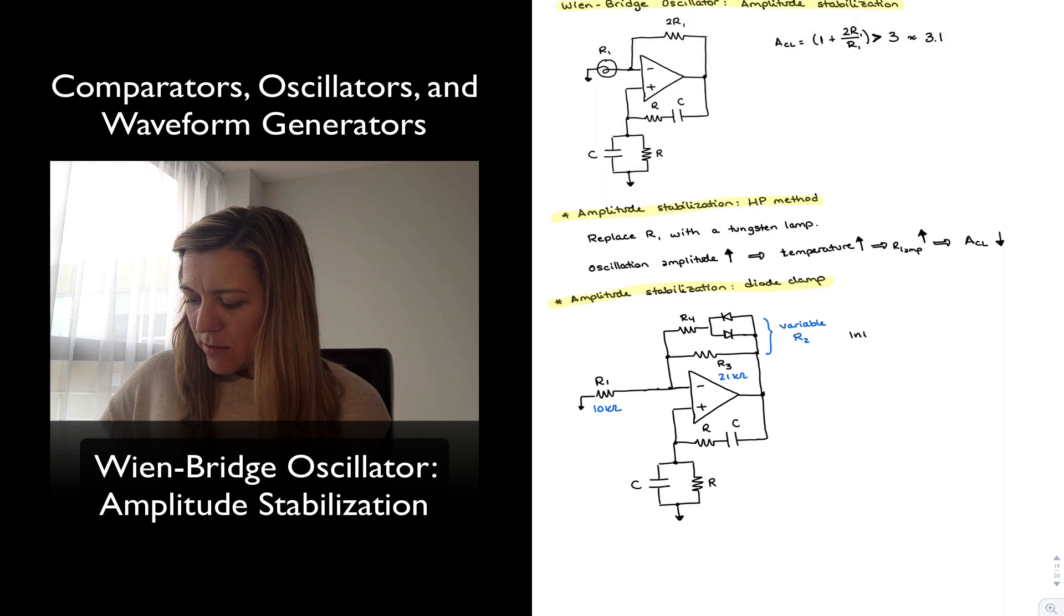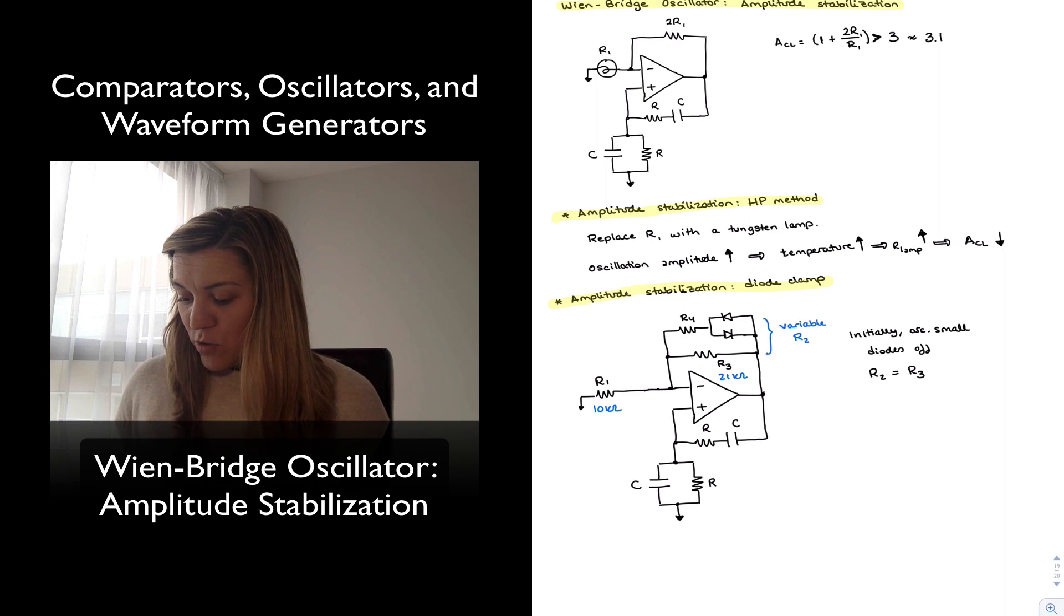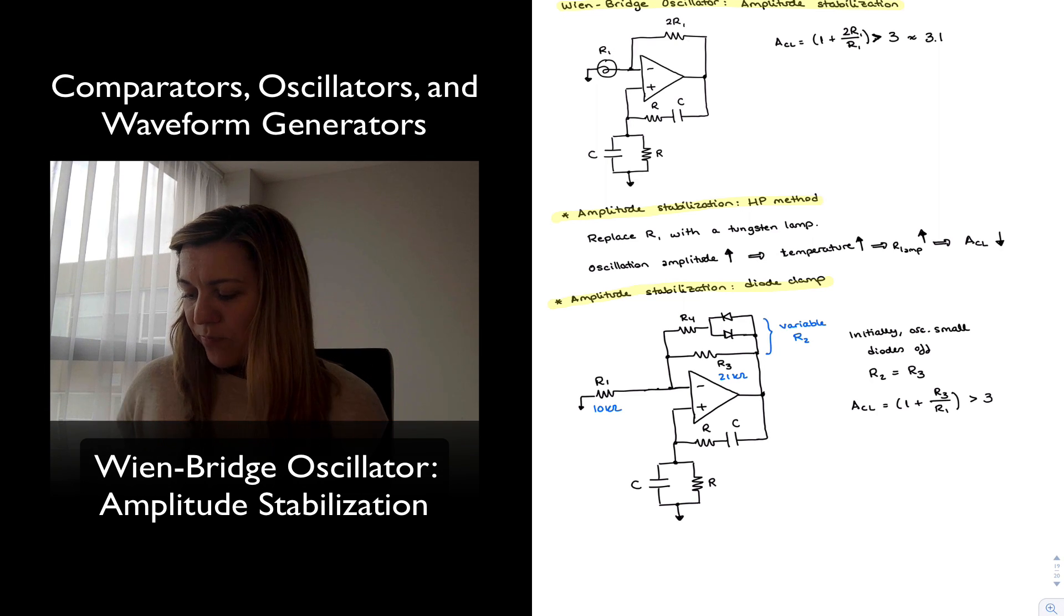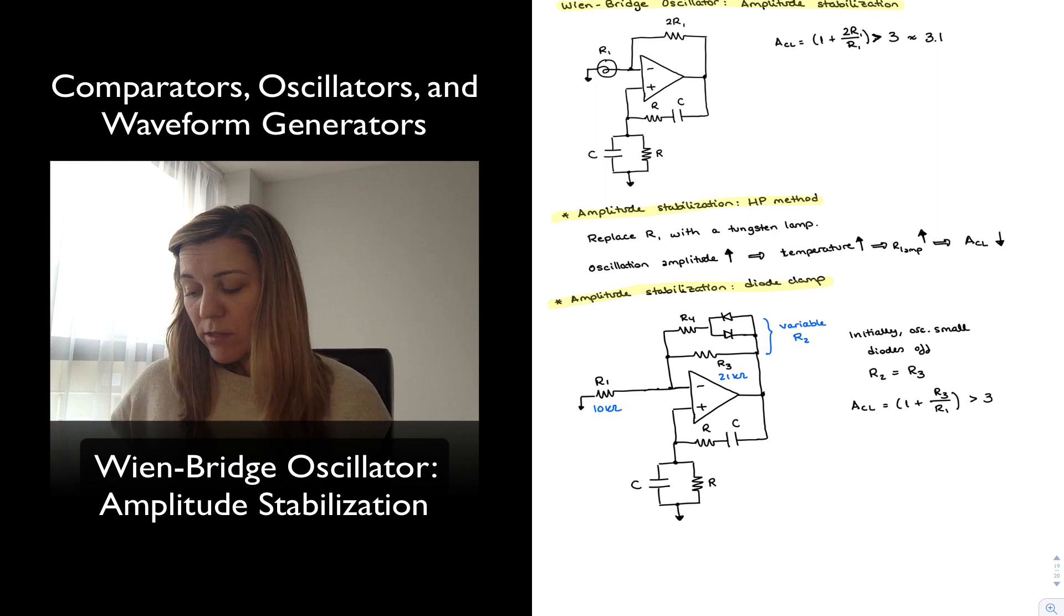So initially, as we said, oscillations are small, diodes are off, and therefore my R2 effective is equal to R3, which means that my gain ACL is going to be equal to 1 plus R3 divided by R1, which is slightly greater than 3. And so my oscillations are going to start increasing.